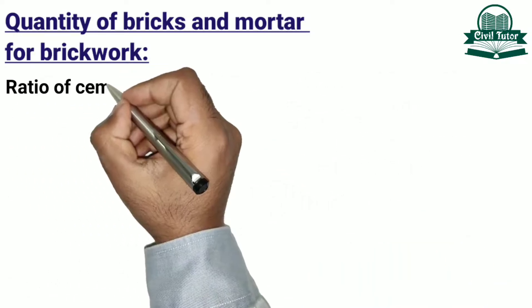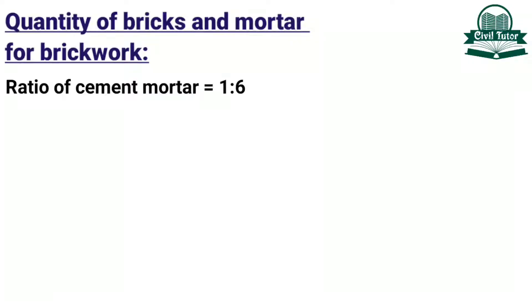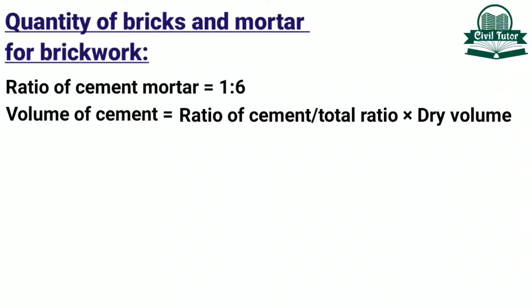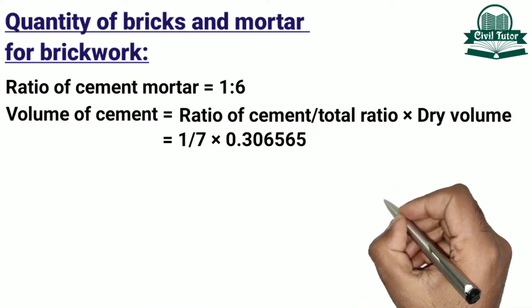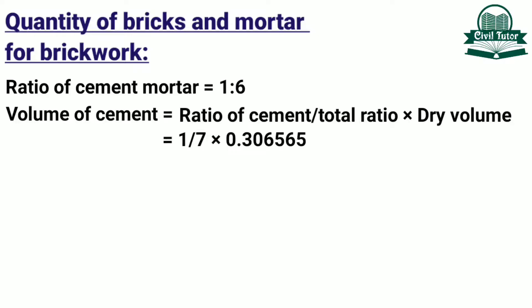It should be noted that the cement mortar ratio is taken as 1:6, that is one part of cement is mixed with 6 parts of sand. Volume of cement will be equal to ratio of cement divided by total ratio, multiplied by dry volume. The ratio of cement is 1, total ratio is 7, and dry volume is 0.306565 m³. So substituting these values we get 1 ÷ 7 × 0.306565 = 0.043 m³.